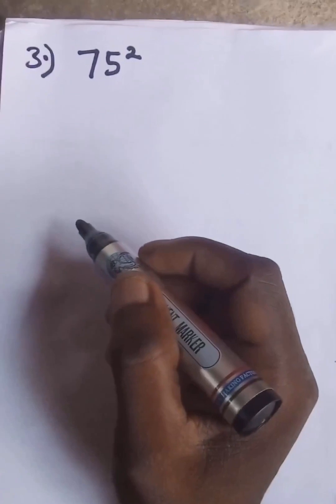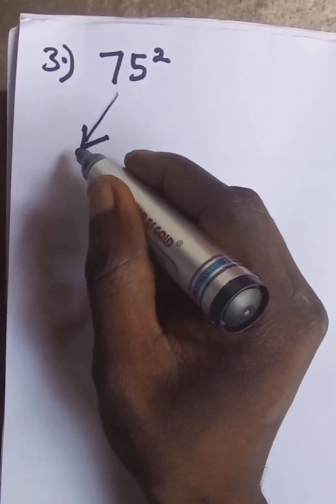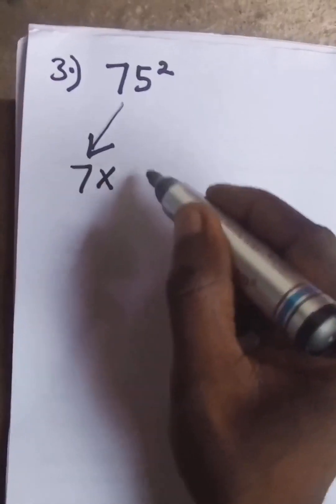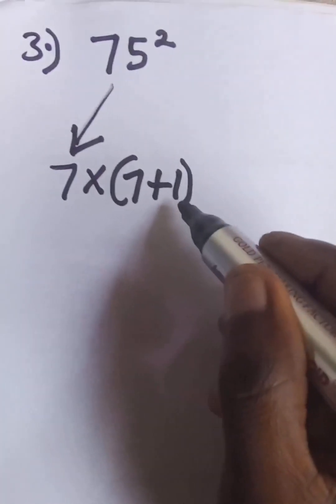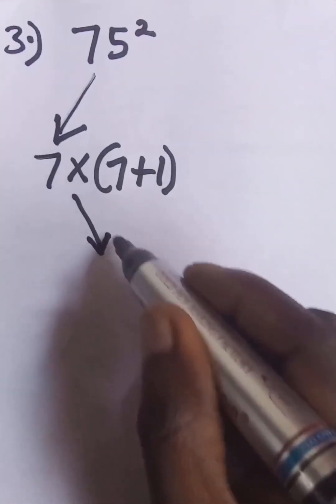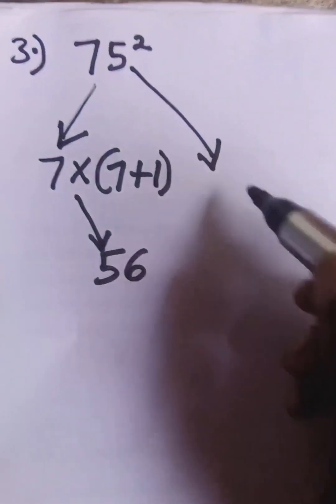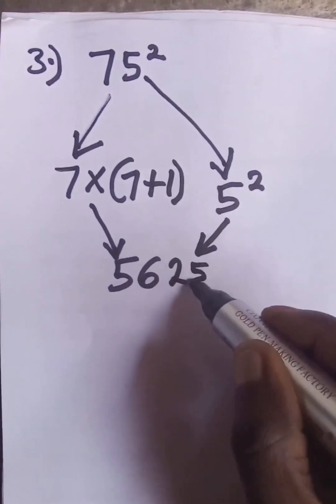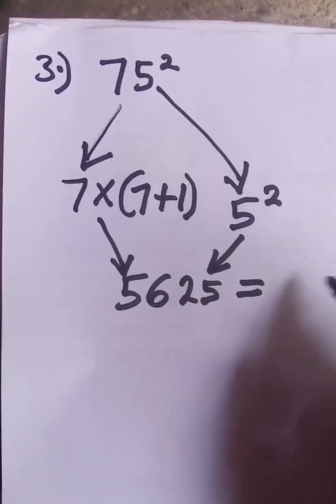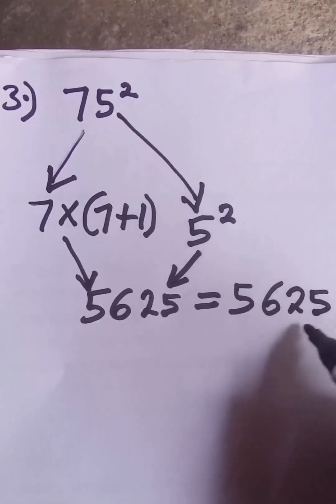Number three: 75 squared. Same procedure. The tens digit is 7, increase it by 1: 7 plus 1 is 8. So 7 times 8 is 56 — that's the first part. The second part: 5 squared is 25. So 75 squared is 5625.